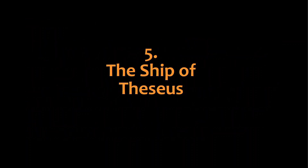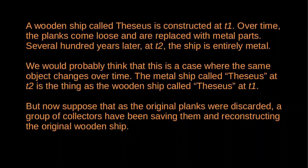The next problem is the ship of Theseus. Imagine a wooden ship called Theseus, constructed at some time T1. Over time, the planks of the ship come loose and are replaced by new shiny metal parts. Eventually, several hundred years later at time T2, none of the original wooden planks remain — the ship is now entirely metal. We'd probably say this metal ship at T2 is the same as the ship at T1. Theseus has undergone a change because the planks have been gradually replaced — we are dealing with a single object changing over time, similar to how an acorn gradually develops into an oak tree.